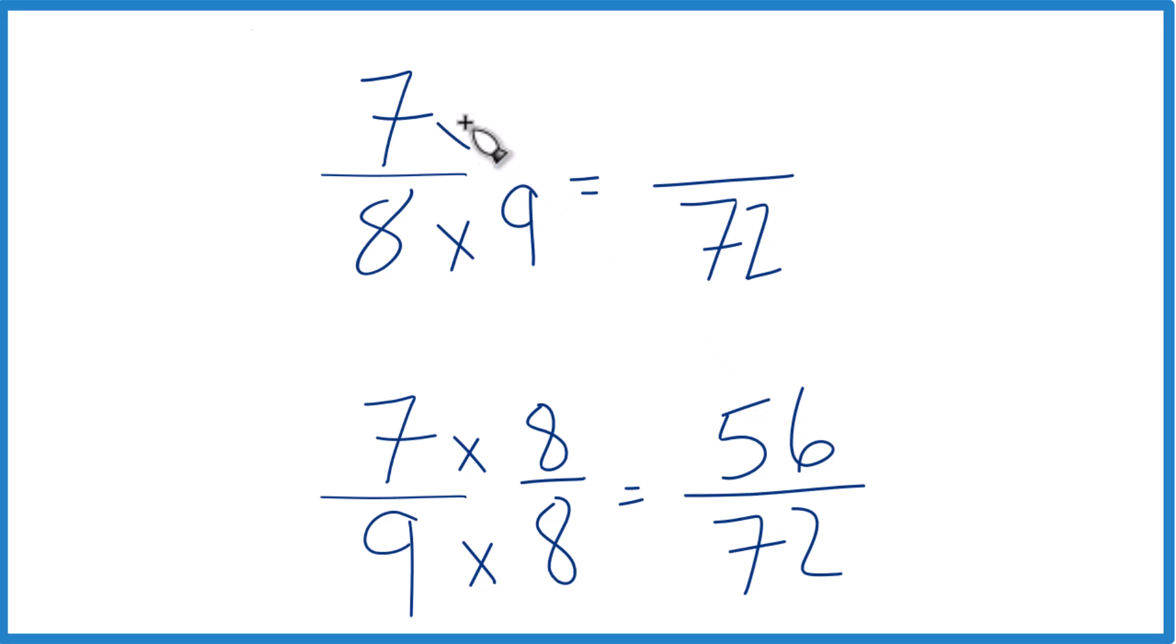Up here, multiply by 9 and we get 63. This is also an equivalent fraction now to 7/8. And since we have the same denominator, we can compare the numerators.